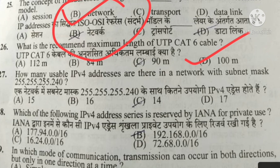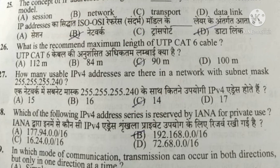How many usable IPv4 addresses are there in a network? The answer is 14. Which of the following IPv4 address series is reserved by IANA for private use? B is the right option. In which mode of communication can transmission be both directional but only in one direction at a time? The answer is half duplex.